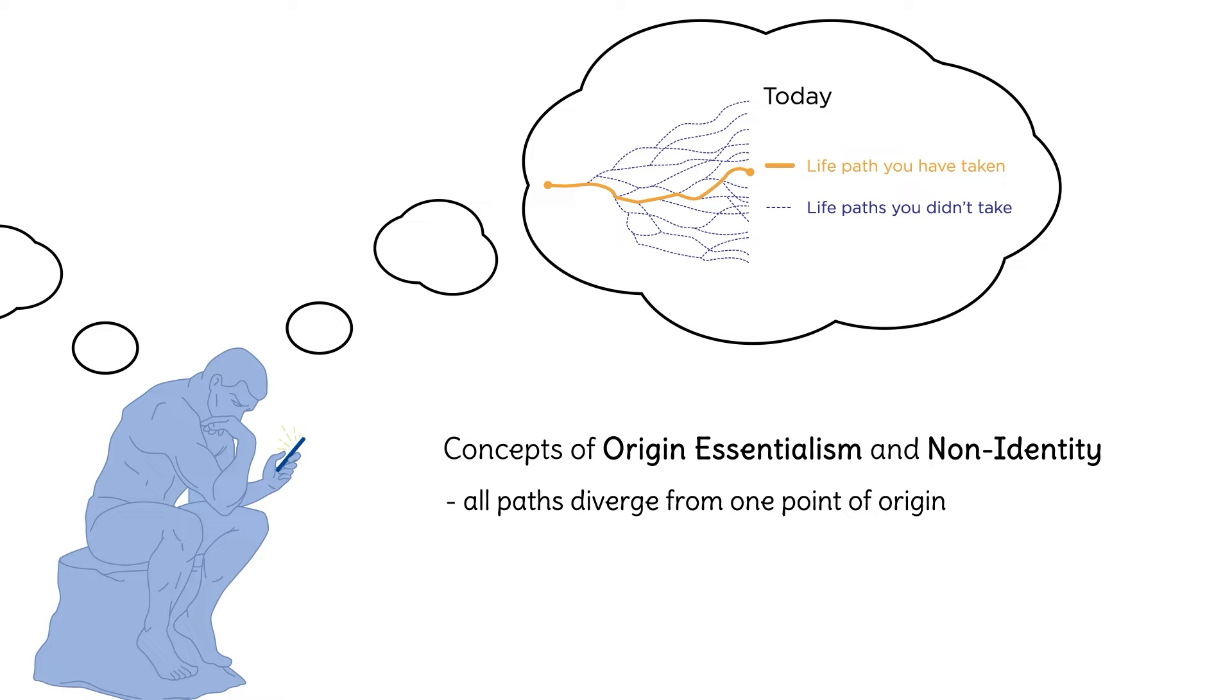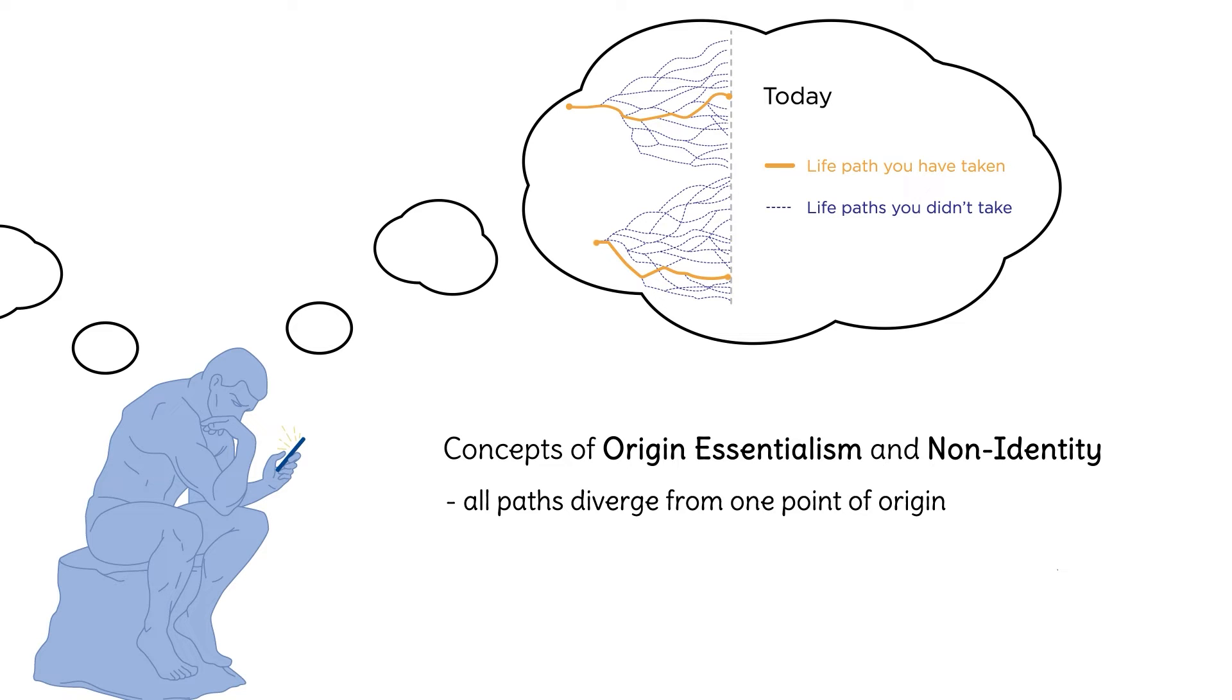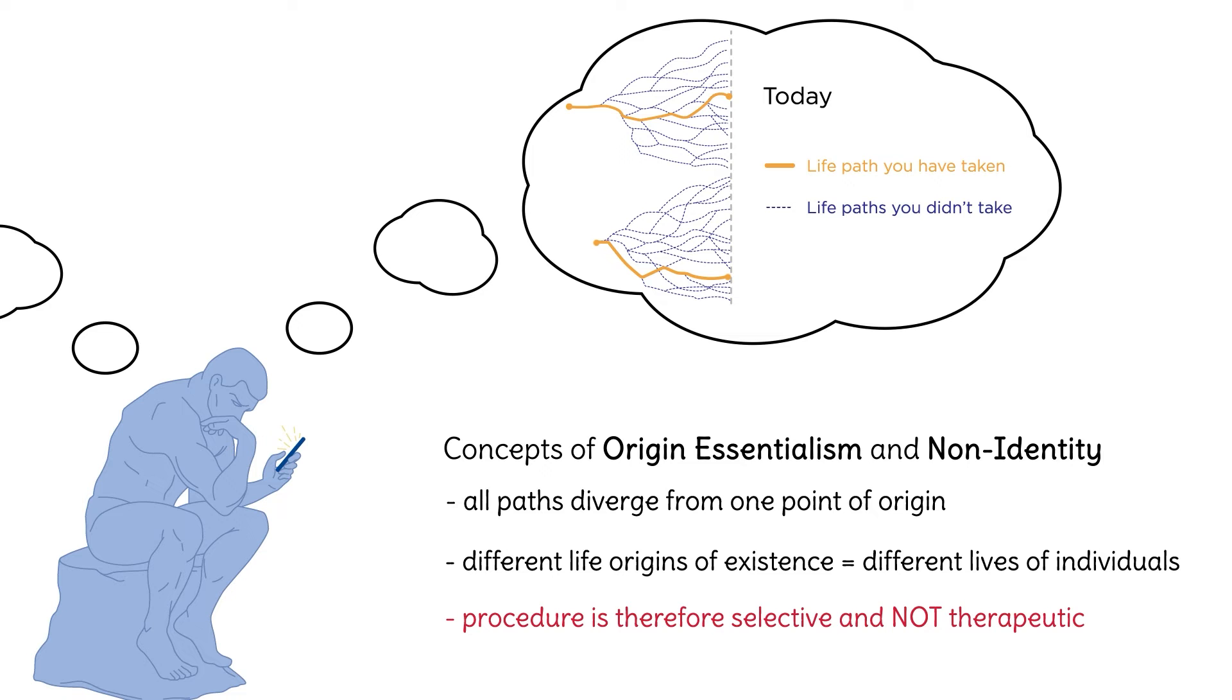Thus, because reproductive heritable genome editing changes the genetic origins of life, another person is created who is different to the one who would have otherwise existed had the genetic change not occurred.